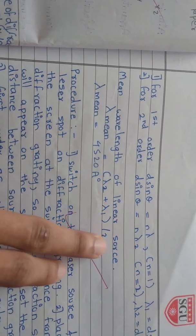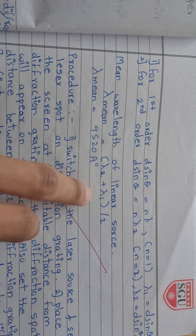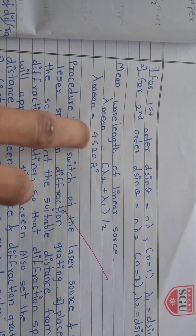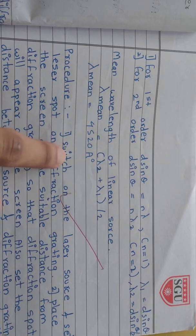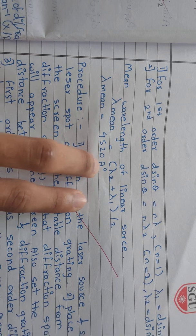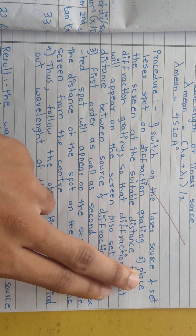Mean wavelength of laser source, lambda mean equals lambda 1 plus lambda 2 divided by 2. It becomes 4520 angstrom. Here is the procedure: switch on the laser source and set laser spot on diffraction grating.